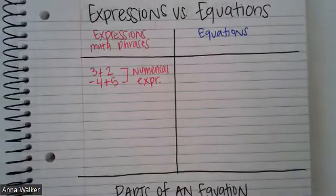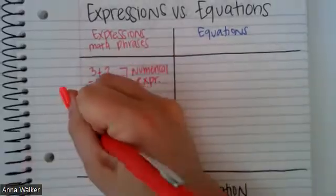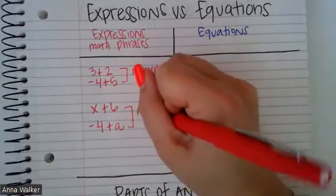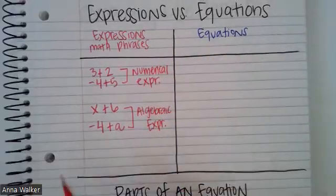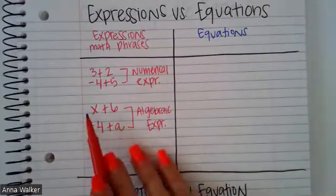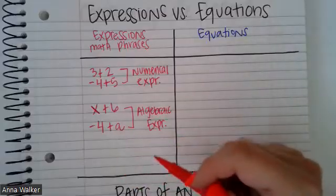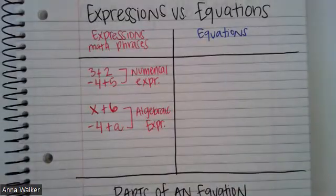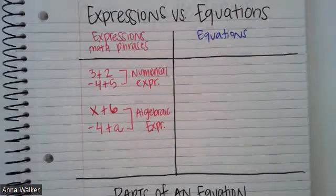We also have something called algebraic expressions. For example, X plus six, or negative four plus A — these are examples of algebraic expressions. They're called algebraic expressions because they have what are called variables: the letters X and A. You can think about it as 'algebraic' kind of sounds like 'alphabet,' and because they have letters, it's like alphabet. So an expression is a math phrase, such as numerical expressions and algebraic expressions.